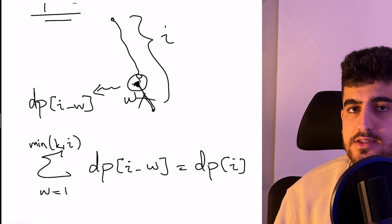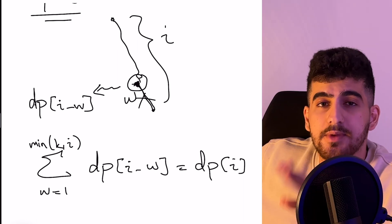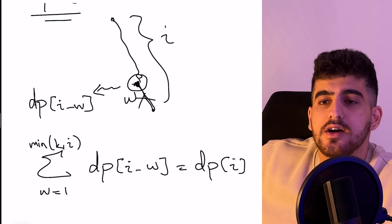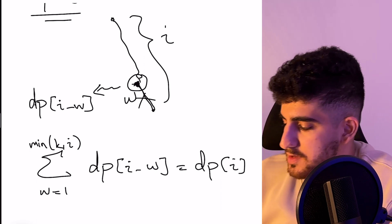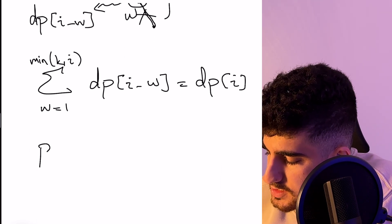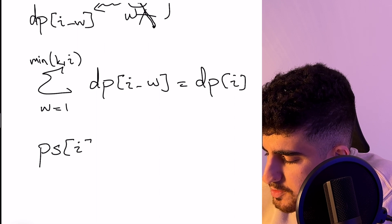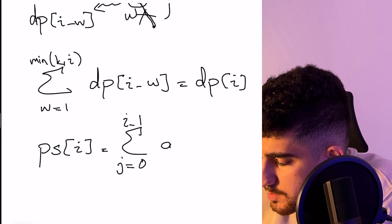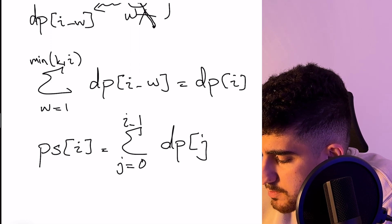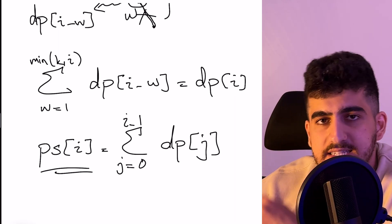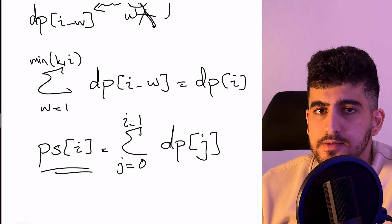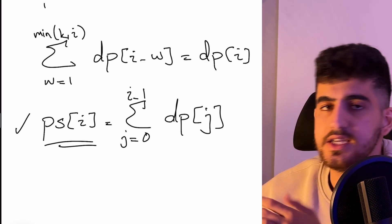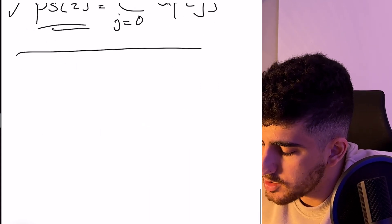How can I calculate that sum efficiently? I made another video about prefix sums and difference arrays — if you want, you can watch that if you're not familiar with these concepts. We can simply use prefix sums: define ps[i] as the sum of all dp[j] for j from 0 to i-1. We can simply update these values and using prefix sums we can calculate the sum of an interval, so all the dp values will be calculated this way.